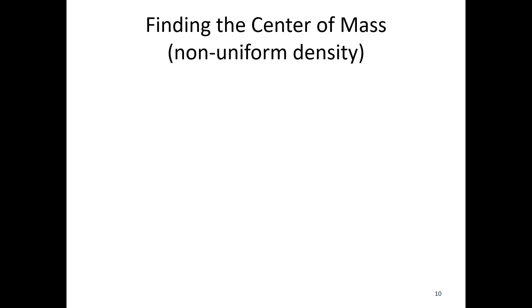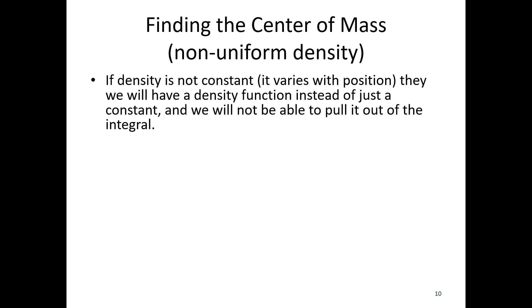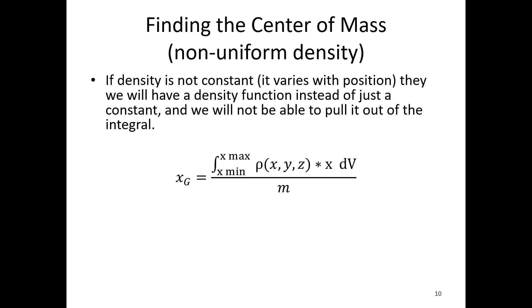In cases of non-uniform density, where it varies with position, we're going to have a density function. So density is not a set value — it is a function that depends on the x, y, and z coordinates, or can just depend on x, y, or z. Some combination of those variables gives you an equation that tells you the density at that point. So that density function remains in the integral, making things more complicated. dV is the same as for centroids, x is multiplied in, but now we've got this separate density function to add to the integral.